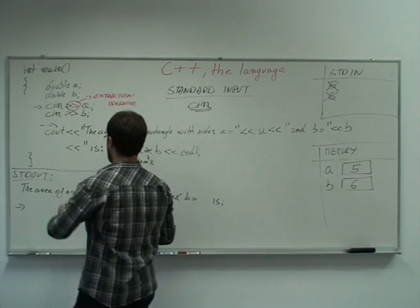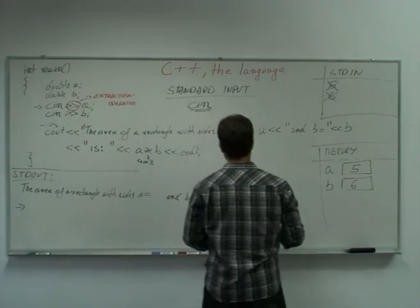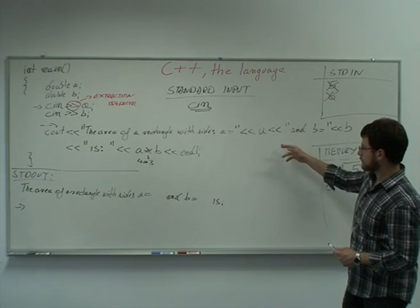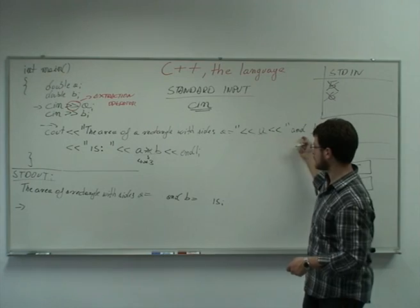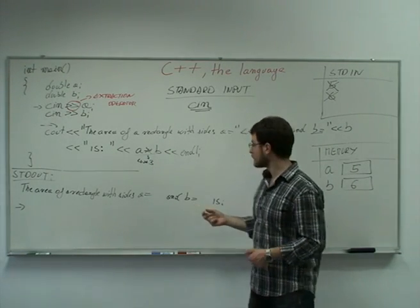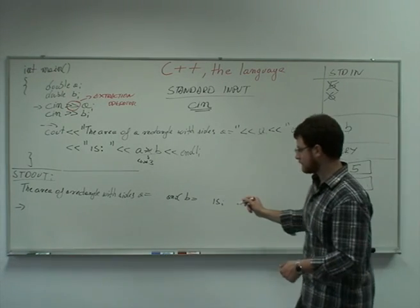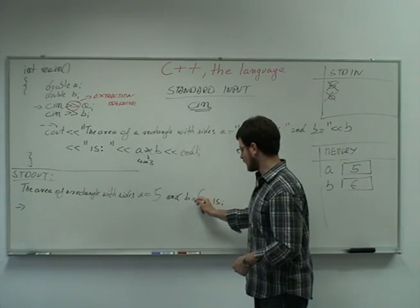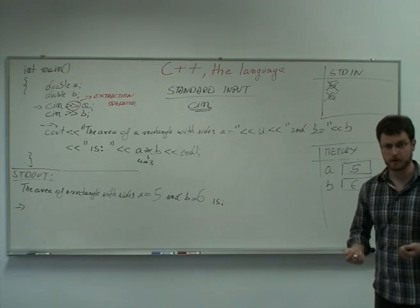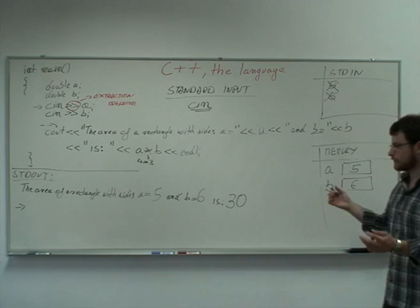And finally, we have our old statement, which prints out this big message. The only change will be here, here and here. Because now we have different values for the variables A and B. So this value is now five. The value of B is now six. And their product is now 30. And the rest remains the same.